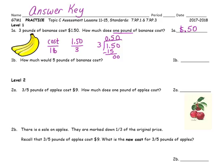How much would five pounds of bananas cost? So we have y equals 0.50x. The cost of the bananas is what we are looking for. We have 50 cents times five pounds: 0.50 times five, and the answer is $2.50.